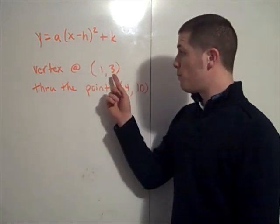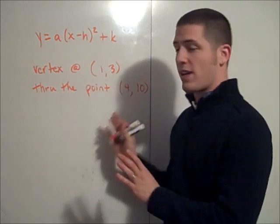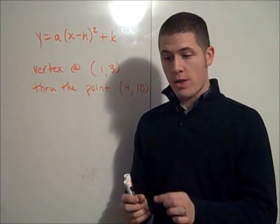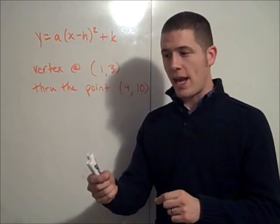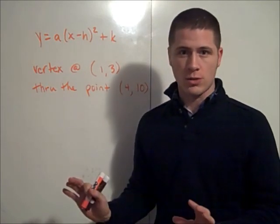This can be done by giving the vertex and another point, or this same process can be done if you're looking at the graph and you can identify the vertex and another point that the graph travels through.